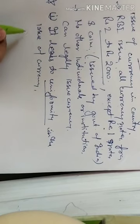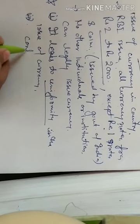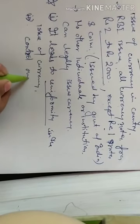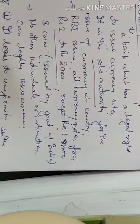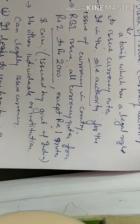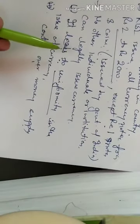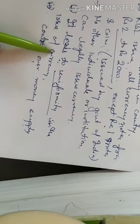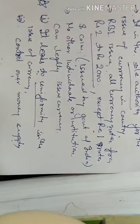The RBI has direct control over the money supply. Due to two reasons, the monopoly power of note issue is given only to the central bank. The first reason is to maintain uniformity in the money system, and the second is to control over the money supply.